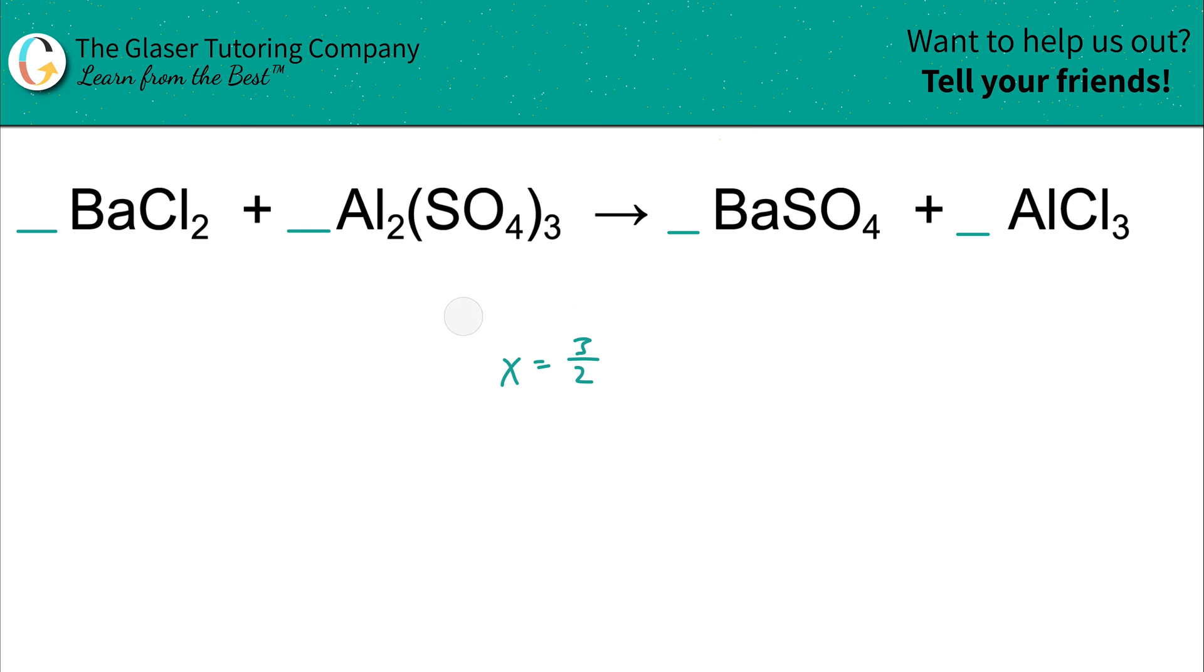There's another way you can work it. And that other way is this: whatever the subscript is of that particular element on the one side becomes the coefficient for that element on the other side. So in other words, I'm going to put a three here, and then this subscript on the left becomes the coefficient there on the right. That becomes a two. Now what happens is what's three times two? Six. What's two times three? Six.